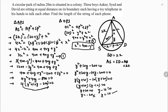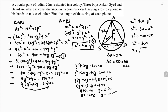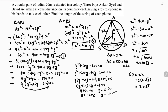Substituting Y equals 10 into Equation 2: X² equals 400 minus 10² equals 400 minus 100 equals 300. So X equals √300 equals 10√3 meters. Therefore SD equals 2X equals 2 times 10√3 equals 20√3 meters. The length of the string of each phone is 20√3 meters.